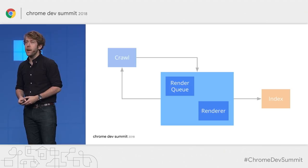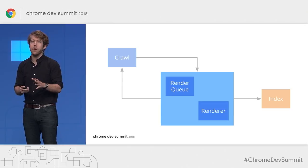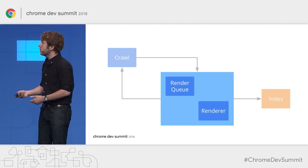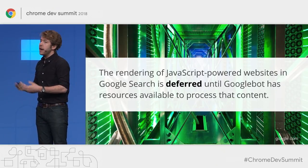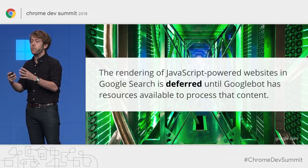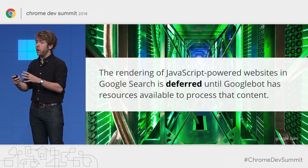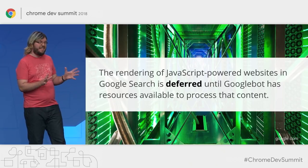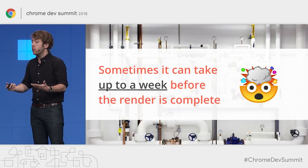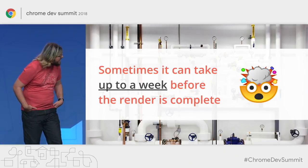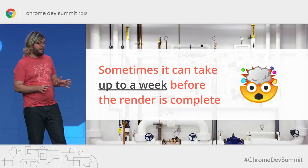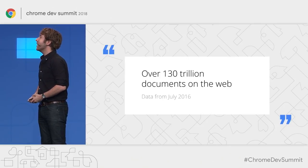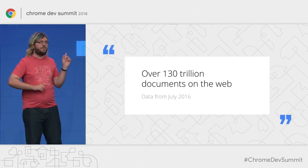TOM GREENAWAY: There's now a renderer inside the process step. More specifically, we have a version of Chrome that opens the content of the page and runs some JavaScript, then spits out the final HTML. We also have a queue, which is quite important. The key point — which John Mueller and I revealed at I/O earlier this year — is that the rendering of JavaScript-powered websites in Google Search is actually deferred until Googlebot has the resources available to process that content. MARTIN SPLITT: Deferred — so what kind of timeline are we talking about? TOM GREENAWAY: It could take minutes, or maybe an hour, or even days, or up to a week before the render is actually completed. The web is really big — we've found over 130 trillion documents on the web so far, and that number is two years old.